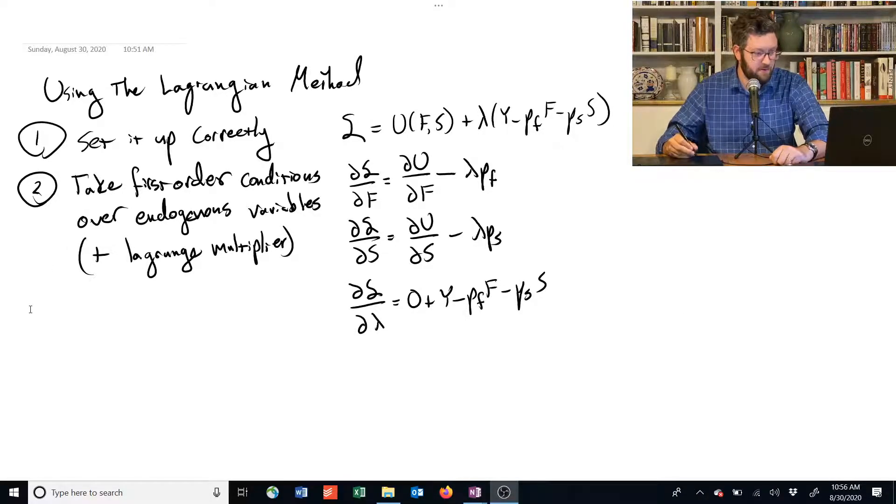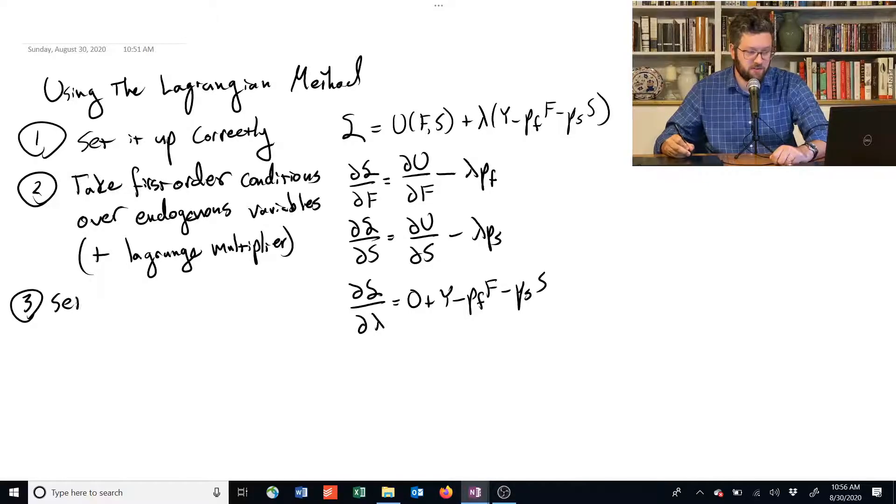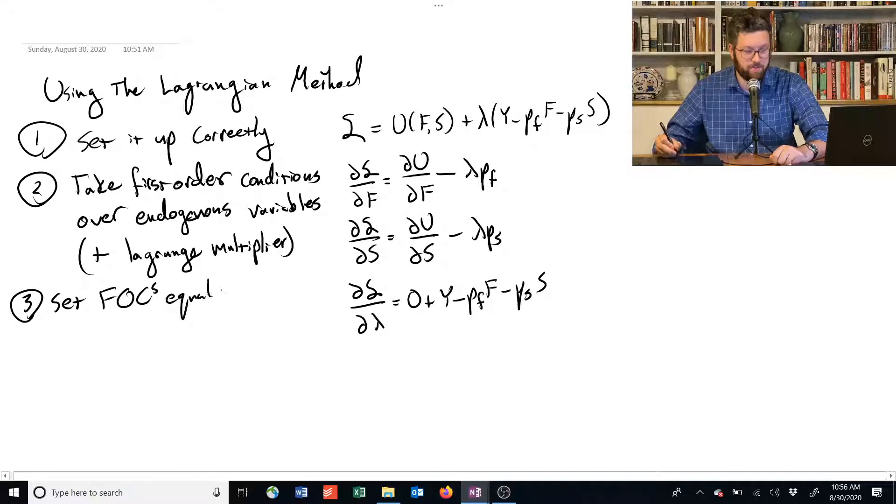Okay, the third step in using the Lagrangian method is to set the first order conditions equal to zero. So this is a pretty easy one.